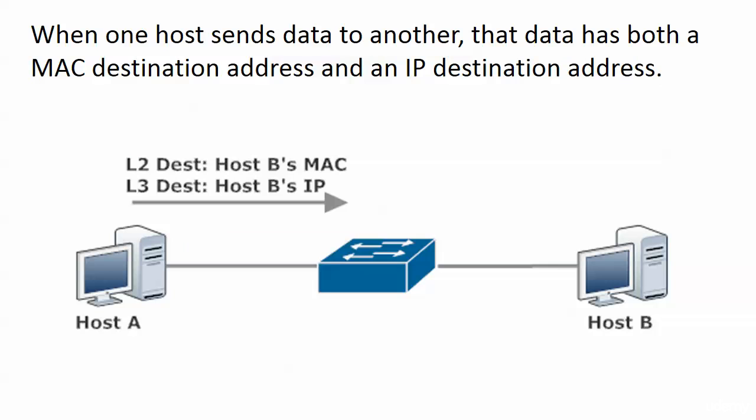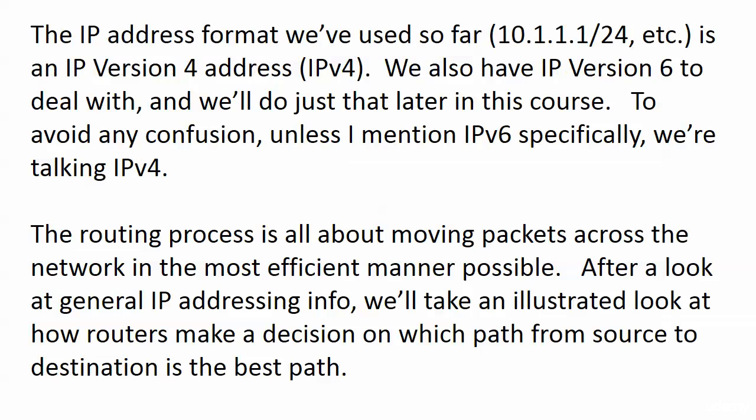We're now going to move up a layer in the OSI model to the addresses that we use much more often in our commands than layer 2 addresses. Layer 2 addressing works so seamlessly and so well that we really don't even think about it a lot. You tend to think that when data goes to a remote destination it just has one destination address — but please keep in mind, especially for your exams, that we're looking at two addresses there. For right now, let's start talking about these IP version 4 addresses, because that's what we're dealing with.